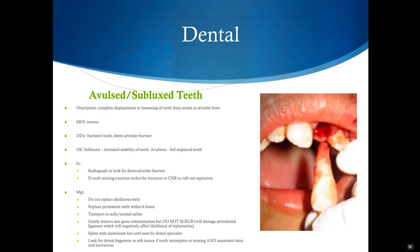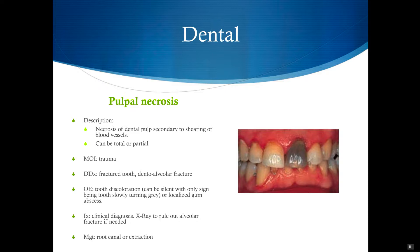Pulpal necrosis can be difficult to catch early on. Essentially there's necrosis of the dental pulp due to injury, which leads to shearing of the blood vessels. It can be total or partial, and almost always occurs as a result of trauma. You typically see a discoloration — a purplish or gray tooth — and it may be associated with a localized gum abscess. For clinical diagnosis, take an x-ray to rule out a dental alveolar fracture. In terms of management, the tooth needs to be extracted or a root canal needs to be done.